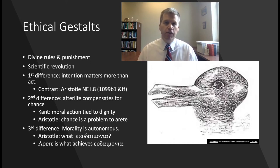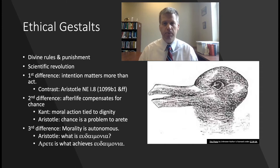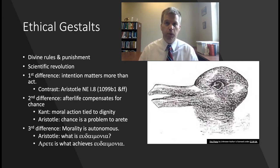A second difference is that from the modern perspective, just deserts — what's appropriate for the ethical life — can be compensated in the afterlife to offset chance. For Aristotle, chance is a real problem for arete and eudaimonia, and the afterlife can still be governed by chance; being born into a bad family would still affect one. Kant tried to tie moral action to human dignity. For moderns, there's a real question: why be moral when it can conflict so deeply with self-interest? For Aristotle, that's not a problem because morality is tied to self-interest through the pursuit of the good life.